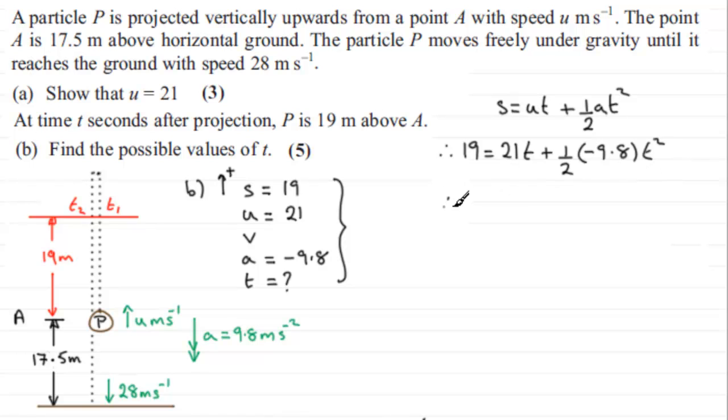So if we tidy this up, we can do half of the minus 9.8, and that's going to give me minus 4.9 T squared.